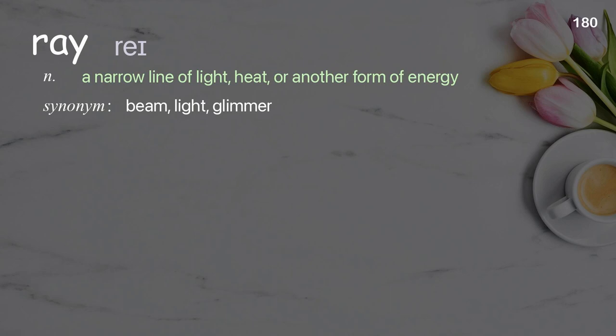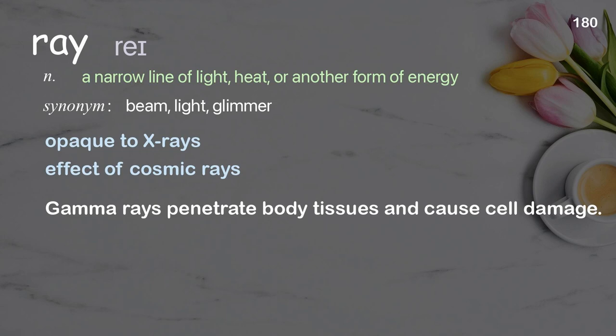Ray: a narrow line of light, heat, or another form of energy. Examples: opaque to x-rays; effect of cosmic rays. Gamma rays penetrate body tissues and cause cell damage.